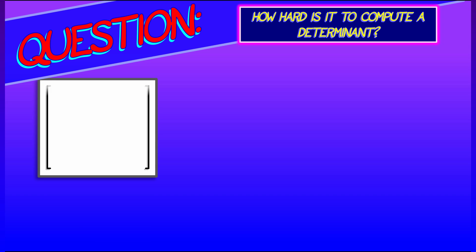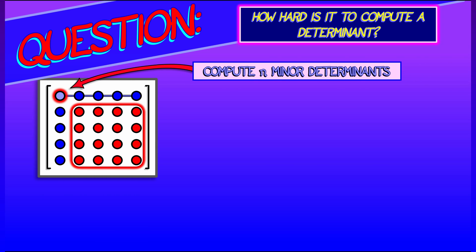Let's think. Let's say you've got an n by n matrix, and you want to compute the determinant by minor expansion. Pick your favorite row, favorite column, say first row.